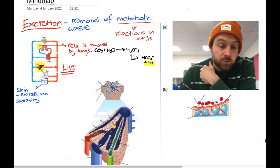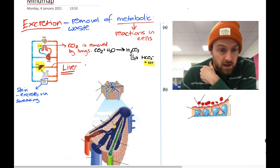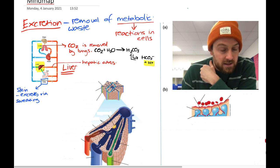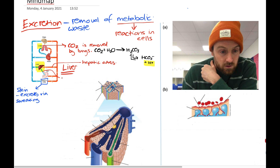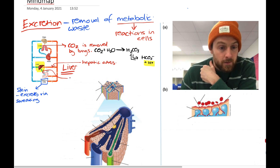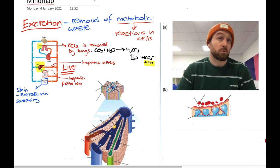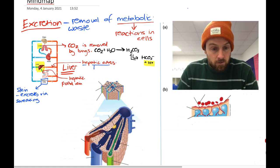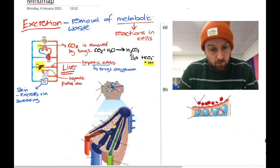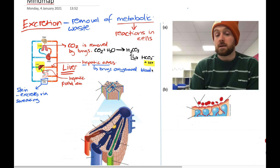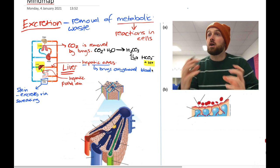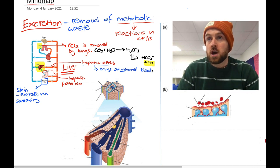The liver has two blood supplies. The first is called the hepatic artery, and the second is called the hepatic portal vein. The liver requires two blood supplies for two reasons. The hepatic artery brings oxygenated blood. The liver is extremely metabolically active — liver cells are doing loads of chemical reactions, which require oxygen and ATP. So it needs a supply of fresh oxygenated blood via the hepatic artery.